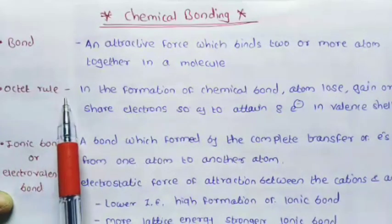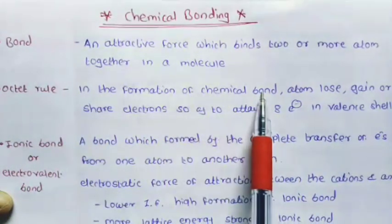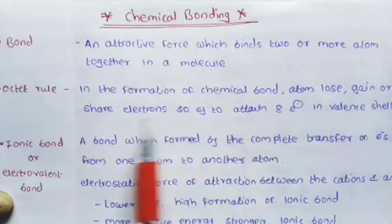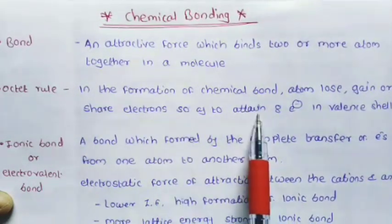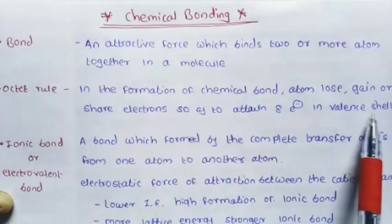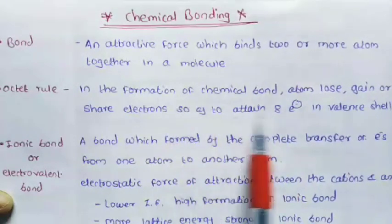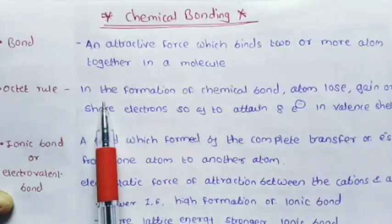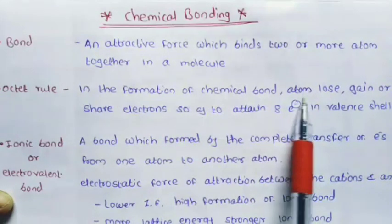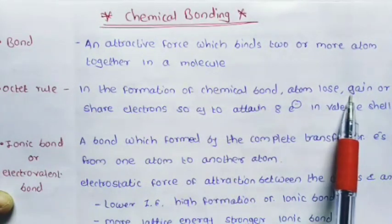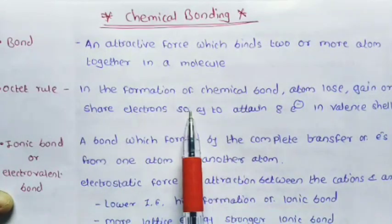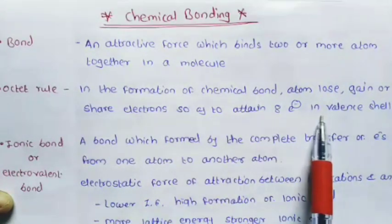The second term is the octet rule. In the formation of a chemical bond, atoms lose, gain, or share electrons so as to attain 8 electrons in the valence shell. This molecule shows the octet rule — atoms lose, gain, or share electrons so that there are 8 electrons in the valence shell.